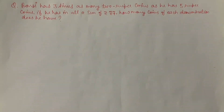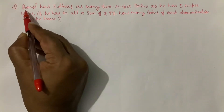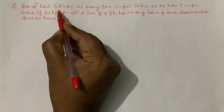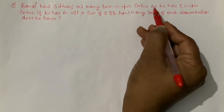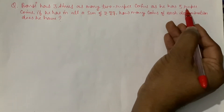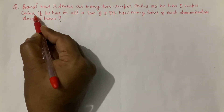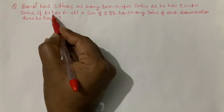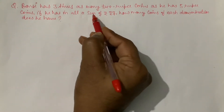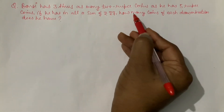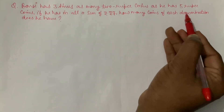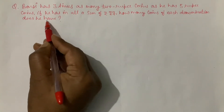Hello dear students, yahan par hum linear equation in one variable ka ek aur question solve karenge. Question diya hai: Bunsi has three times as many two rupee coins as he has five rupee coins. If he has in all a sum of rupee seventy seven, how many coins of each denomination does he have?